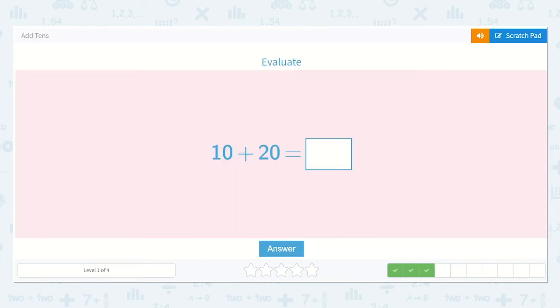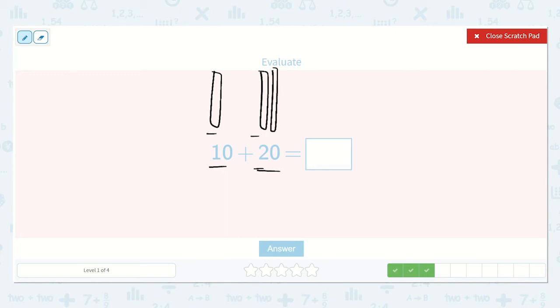Now we have 10 plus 20. There is one 10, and then 20 has two tens. 10, 20. Now let's count them all. 10, 20, 30. Wonderful!